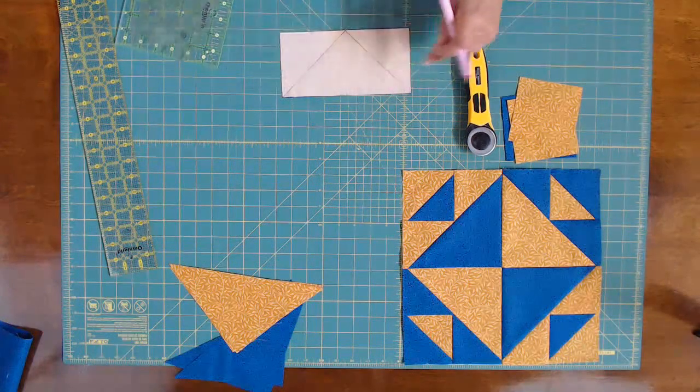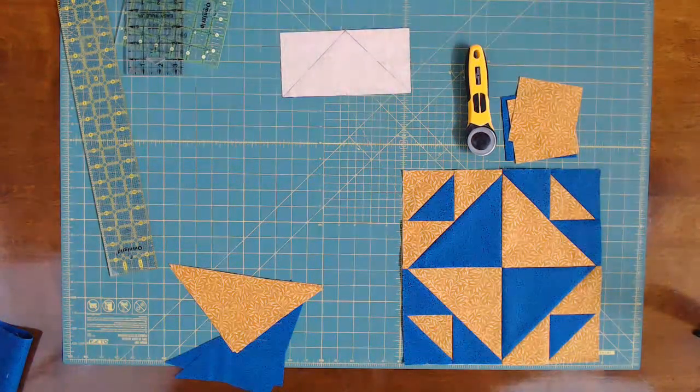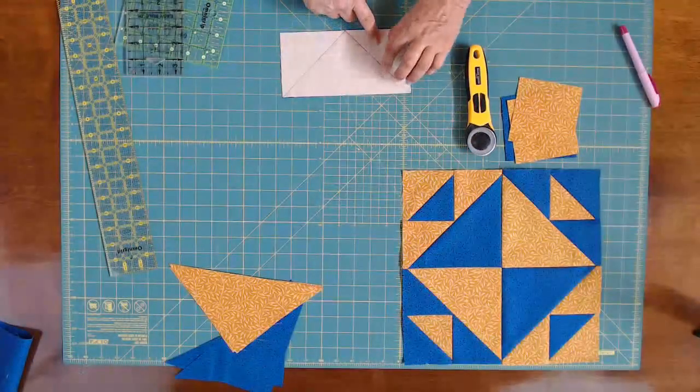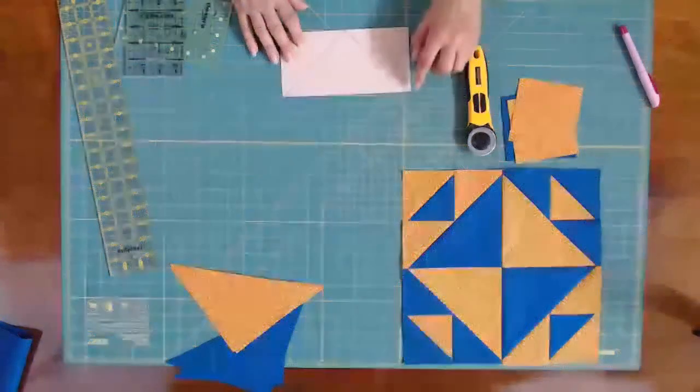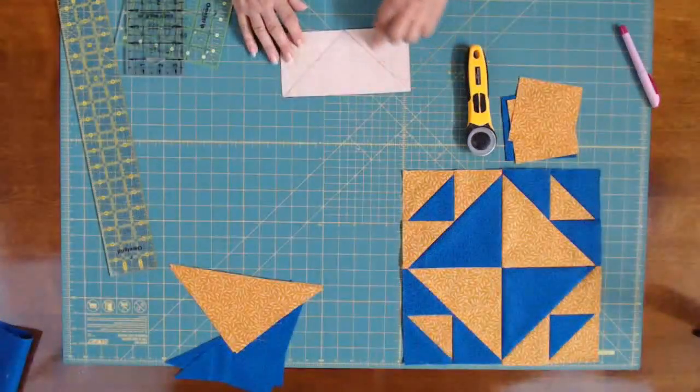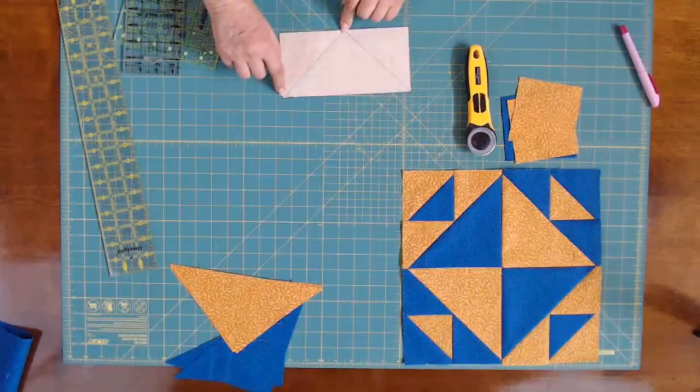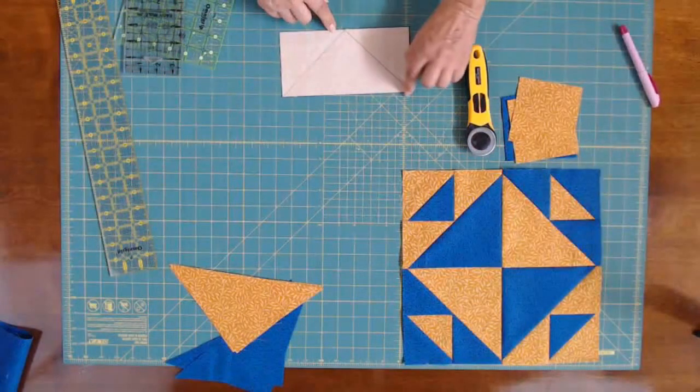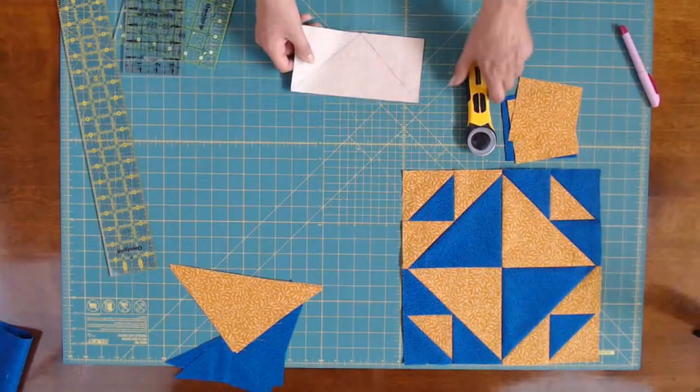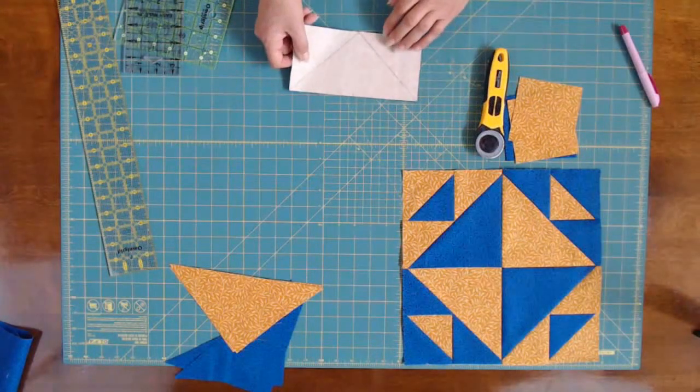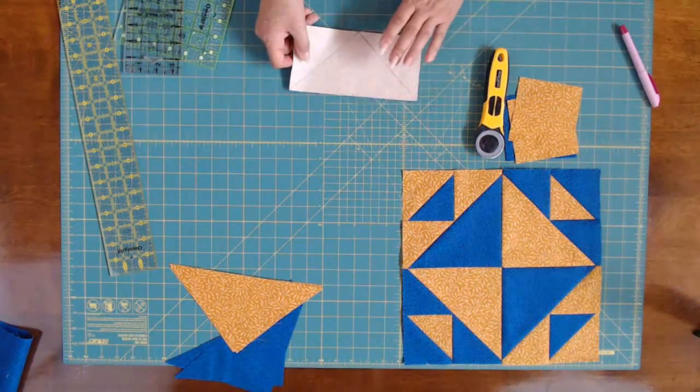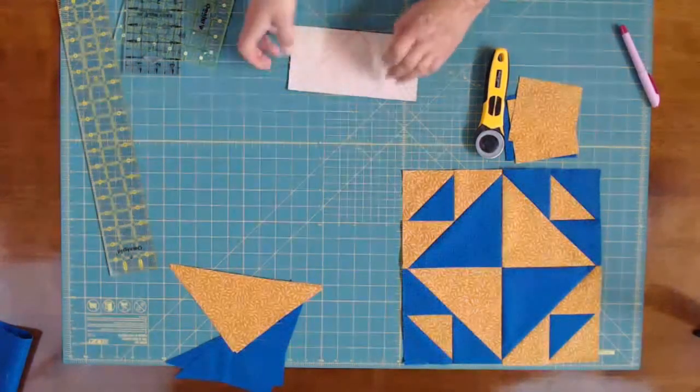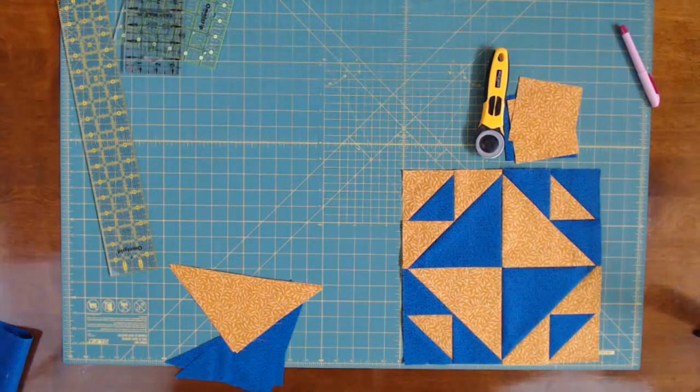Okay, now that I've got my diagonals on, I will take this to the machine and sew a scant quarter inch on each side of these lines. And I'll do that by starting at one point and sewing down, pivoting and sewing this way, pivoting and coming back and sewing this way, and then pivoting and going that way. This is called speed sewing, so that you don't really have to take the fabric out of the machine. You just keep turning it in order to get your four half square triangles. So I will go sew this.